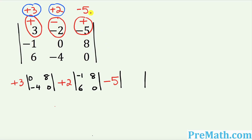Finally, look at this negative 5. Hide the column that contains negative 5 and the top row as well. The unblocked numbers are negative 1, 0, 6, and negative 4. Put those numbers in the corresponding box. Now we have all three 2×2 determinants set up and ready to simplify.